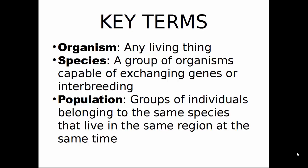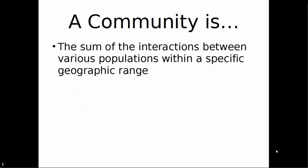A population is a group of individuals belonging to the same species that live in the same region at the same time. So that anthill in your backyard is a population of the same species of ants. The geese flying overhead in the V formation is a population of the same species of bird living in the same area at the same time. A community is the sum of the interactions between various populations within a specific geographic range — populations of organisms living together in the same area.